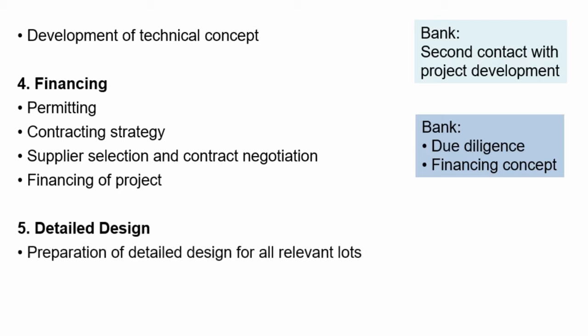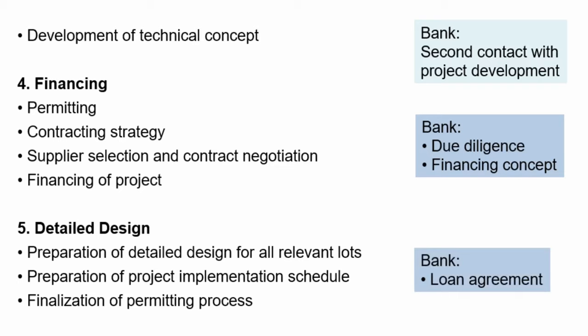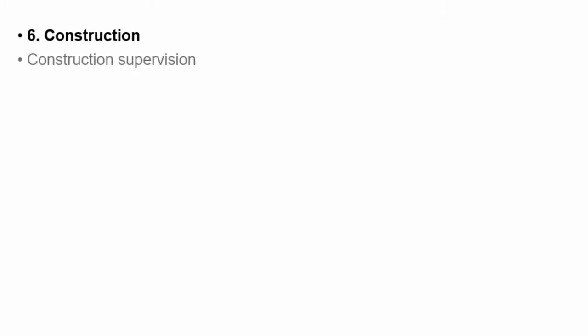Then you do a really detailed implementation schedule — how many workers you need on site, how long it will take, whether it's done in summer or winter and so on. You have to take care of all the details. You finalize the permitting process and the timeline: when will the project be online, when will payments for the purchased electricity start? And then with the bank, you come to a loan agreement with fixed interest rates.